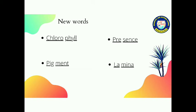The next word is lamina, L-A-M-I-N-A. Lamina is a part of a leaf, flat part of a leaf. The leaf's flat part we call lamina.